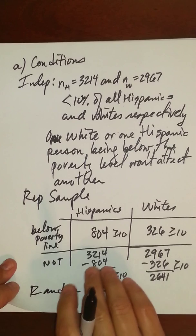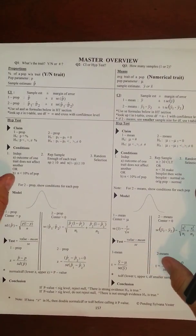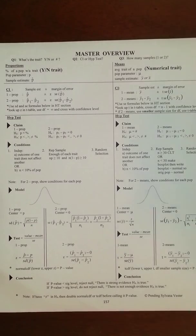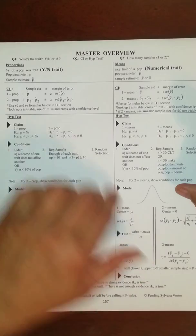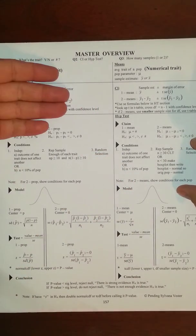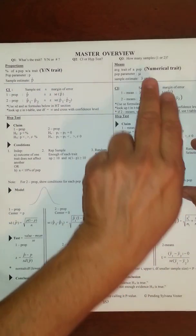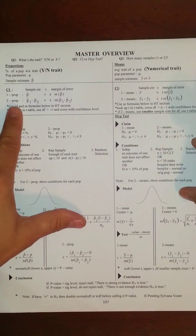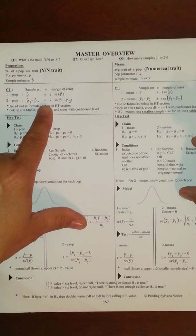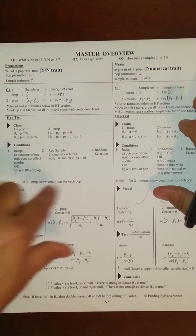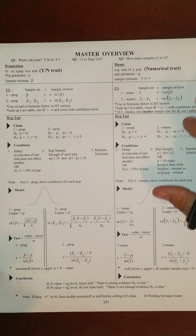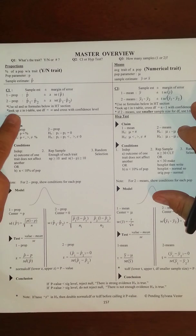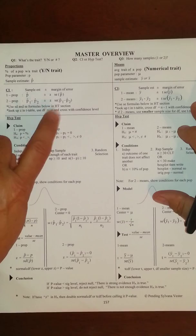Now that we've checked conditions, using the master overview: the trait is a yes-no trait, you either are or are not below the poverty line. We're doing a confidence interval, and we have two samples because we have two populations. The general equation is p-hat_1 minus p-hat_2 plus or minus z times the standard error of p-hat_1 minus p-hat_2. The standard error formula is below — we're not pooling. We looked up z in the T-table using degrees of freedom of infinity crossed with the 98% confidence level.